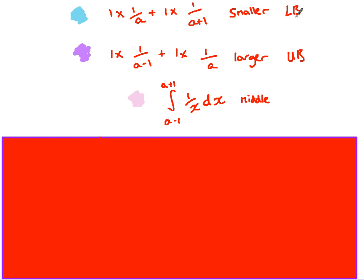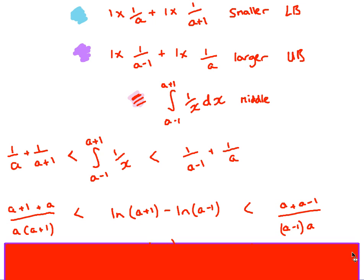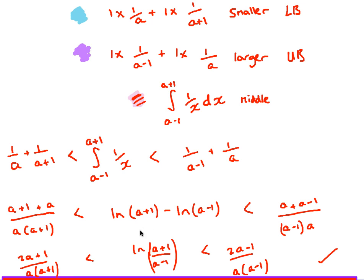I put that into an inequality: the addition of the two blue rectangles is less than the integral from a minus 1 to a plus 1 of 1 over x, which is less than the addition of the two purple rectangles. I simplify the left side to get 2a plus 1 over a times a plus 1, I integrate to get ln(a+1) minus ln(a-1), and the right side simplifies similarly. Using the laws of logs, I factorize and simplify to show that 2a plus 1 over a bracket a plus 1 is less than ln of the ratio, which is less than the corresponding upper bound.